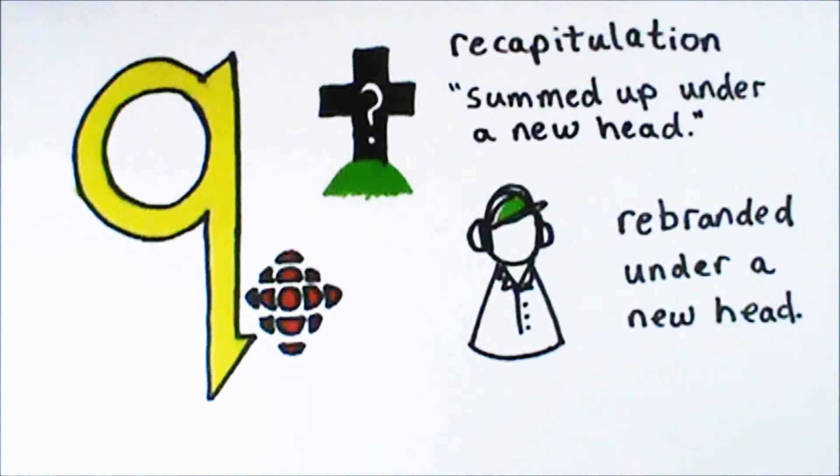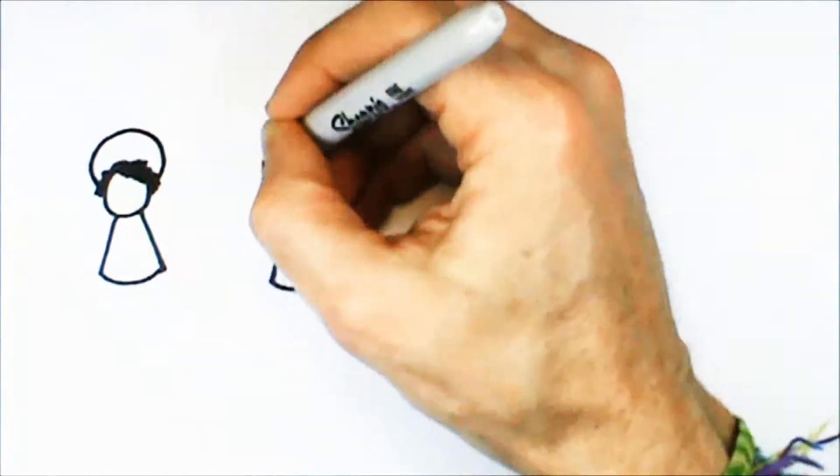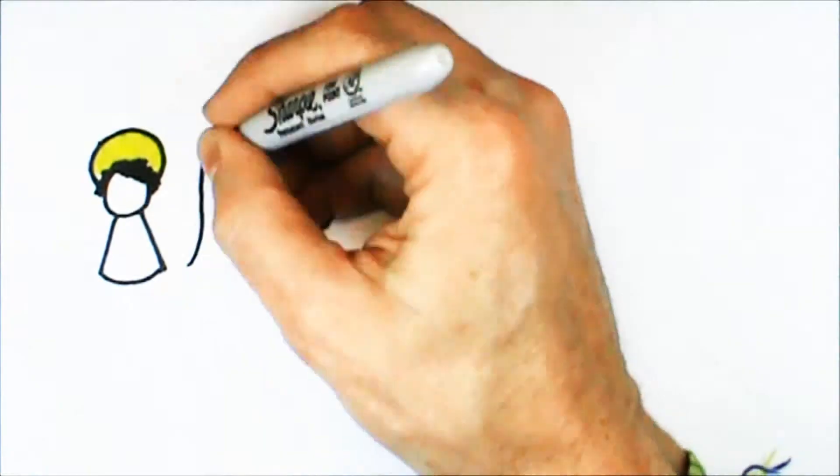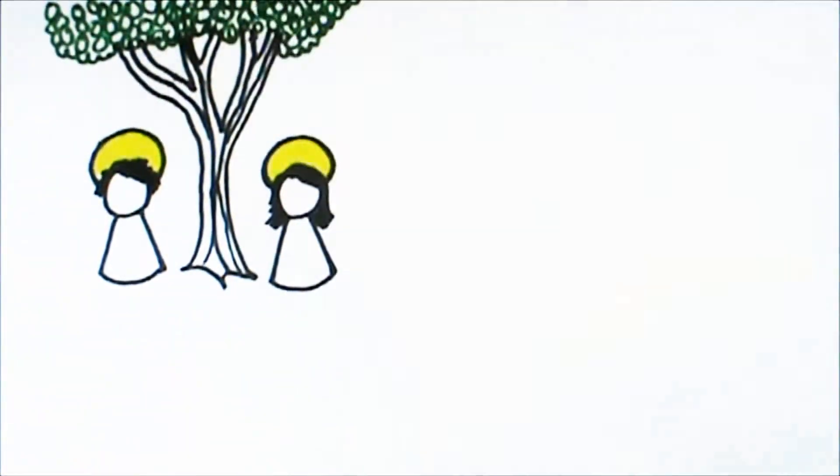The concept goes something like this. Originally, God created human beings to live in holy relationship with him, and in loving relationship with the rest of creation. But, because of human sin, people did not and have not lived up to this original intention.